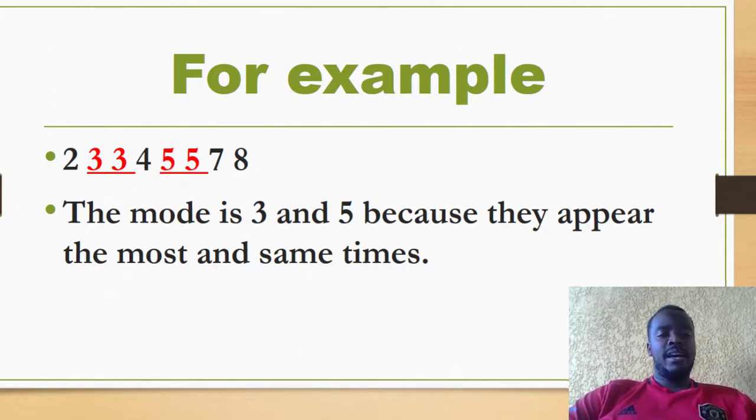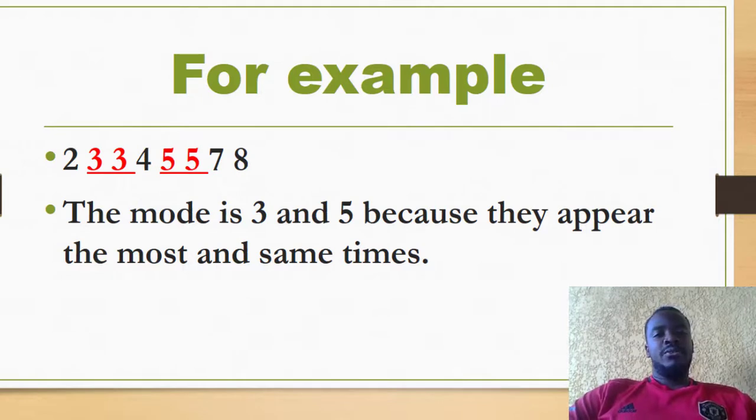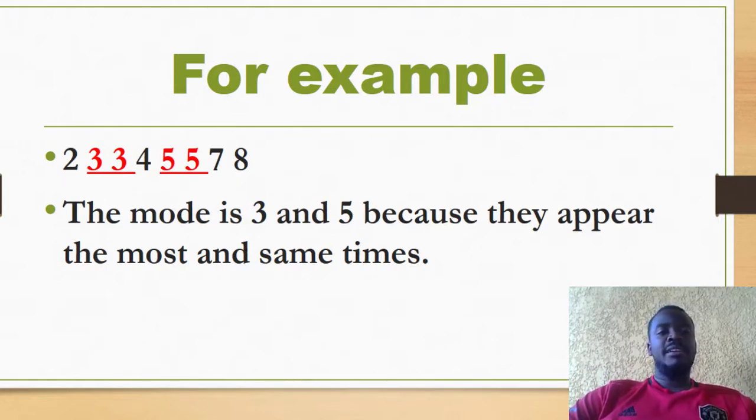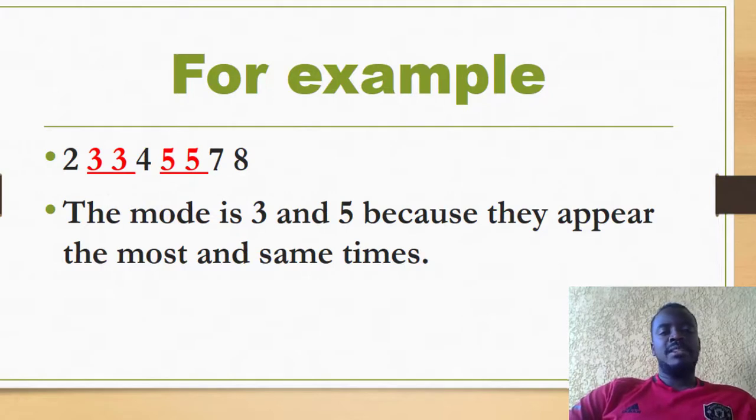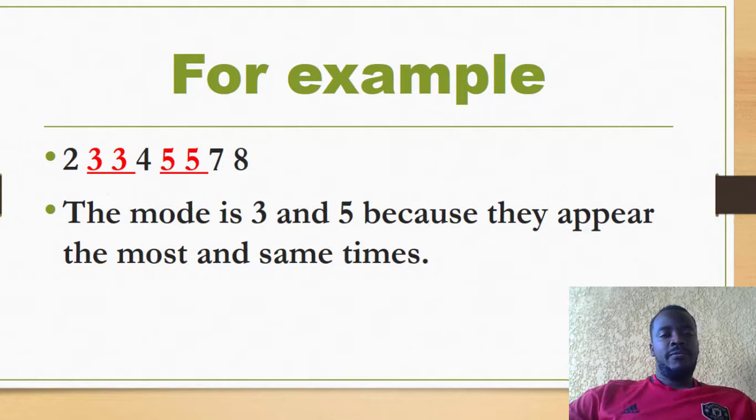Just like you can see, the numbers are highlighted. The reason why the mode is 3 and 5 is because 3 appears 2 times and 5 appears 2 times. There is no other number that appears more than 2 times. That is why the mode is 3 and 5.